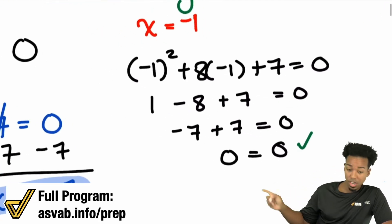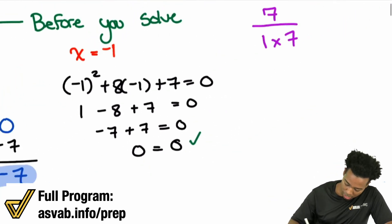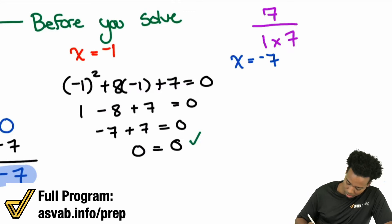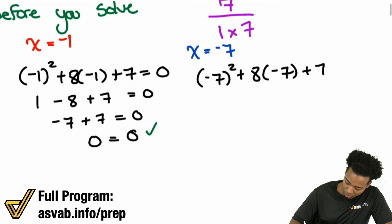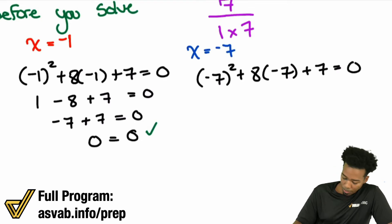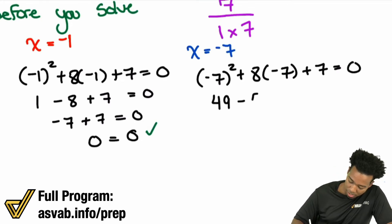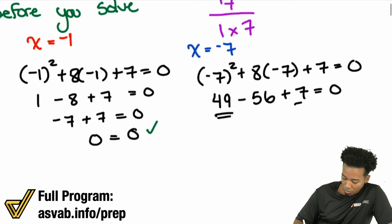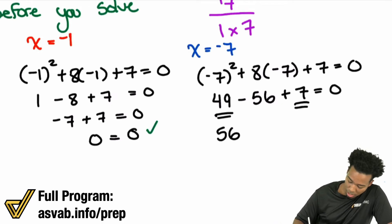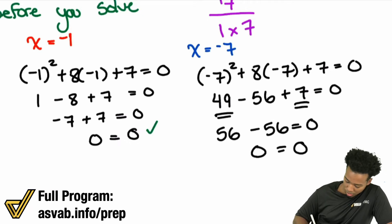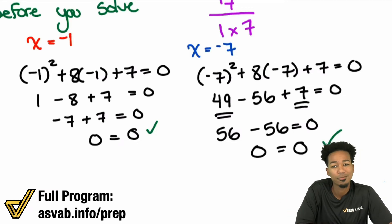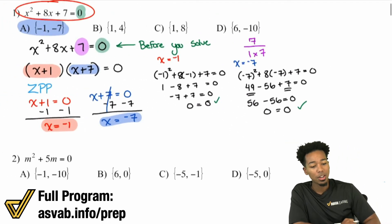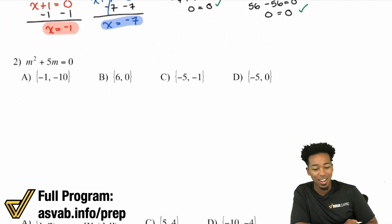Now let's check with x equals negative 7. Plugging it in: negative 7 squared plus 8 times negative 7 plus 7 equals 0. Negative 7 squared is positive 49; 8 times negative 7 is negative 56. We can combine 49 plus 7 first to get 56, so we have 56 minus 56, which equals 0. Absolutely correct. You can always check your work by plugging the numbers back in, just like regular equations. From here on I'm just going to solve without checking.